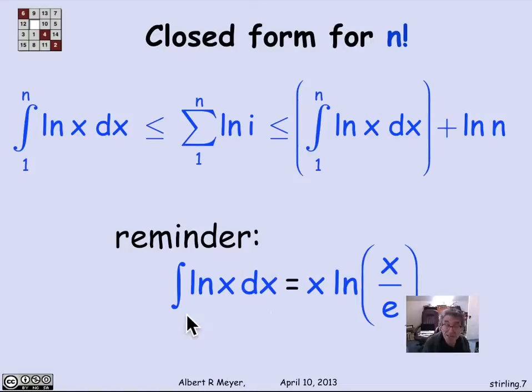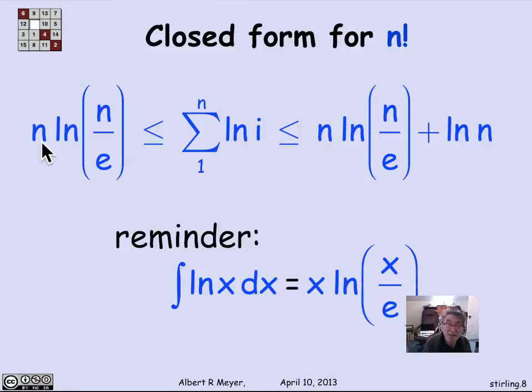In case you don't remember from first term calculus, the integral of log of x is, in fact, the indefinite integral is x log of x over e, which you can easily check by differentiating x log x over e. ln means natural log. Remember, in computer science, log means log to the base 2, unless you explicitly put some base on it, like log sub 10. So ln is the natural log from calculus. And plugging in this value for the indefinite integral of log of x and using the bounds 1n, what we come up with is that the sum of the logs is bounded between n times log n over e and n times log n over e plus log of n. It's a pretty tight bounds.